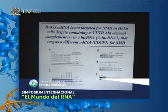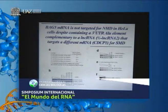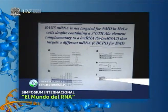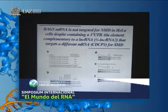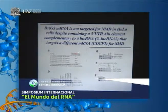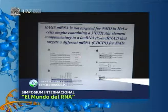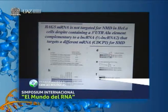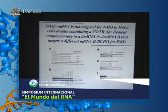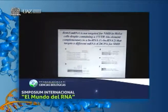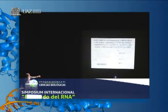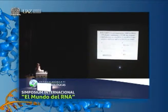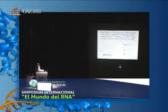Just because an mRNA has an ALU element in its 3-prime UTR doesn't mean it's always targeted for SMD. The example is BAG5 mRNA, which anneals to half-SPS long non-coding RNA2. That long non-coding RNA is definitely present in the cells we're using and definitely functions in SMD when it anneals to another mRNA. However, it doesn't trigger SMD of BAG5 mRNA—BAG5 mRNA does make it to the cytoplasm, it does not bind Staufen, and it is translated. The question is whether there is a molecule interacting with the ALU element in BAG5 3-prime UTR that precludes long non-coding RNA binding, or some inhibitory molecule preventing Staufen from binding once a duplex forms. We don't know the answer yet.